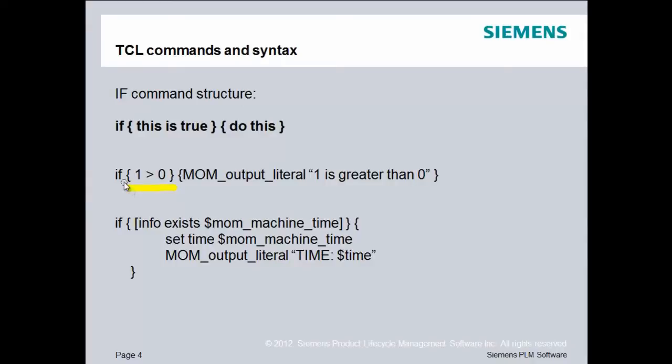So I have some examples there on the screen. If 1 is greater than 0, which of course is true, we will do this: mom output literal anything that's enclosed in these double quotes, "1 is greater than 0". That's a fairly easy one to understand.